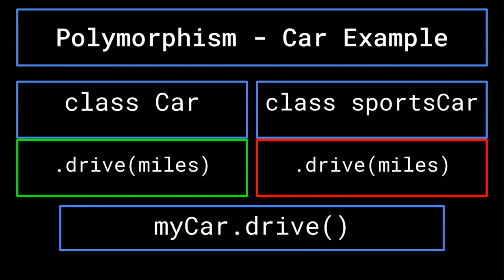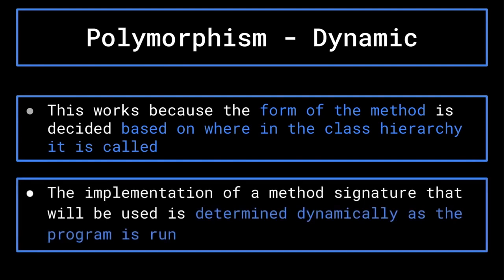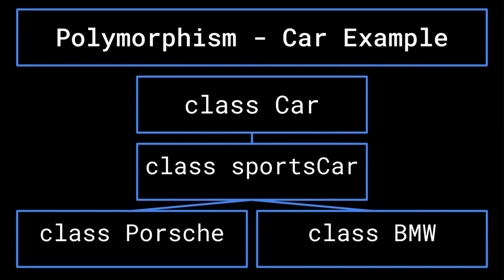If you create an instance of a sports car called my sports car, the sports car implementation of the dot drive method will override the generic car version. Therefore, my sports car dot drive will decrease my sports car's gas attribute by 0.02 gallons per mile. Were you to create an instance of the car class called my car, my car dot drive would instead decrease my car's gas by 0.04 gallons per mile. This is an example of dynamic polymorphism, as the implementation of a method signature can change depending on which level in the class hierarchy it is called. The form of the method that is called is decided dynamically as the program is run.